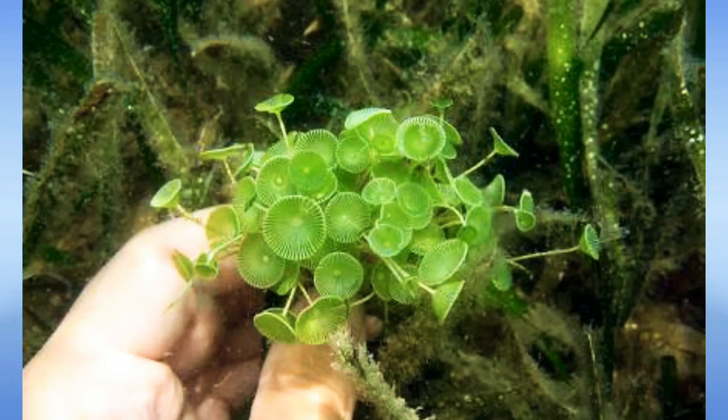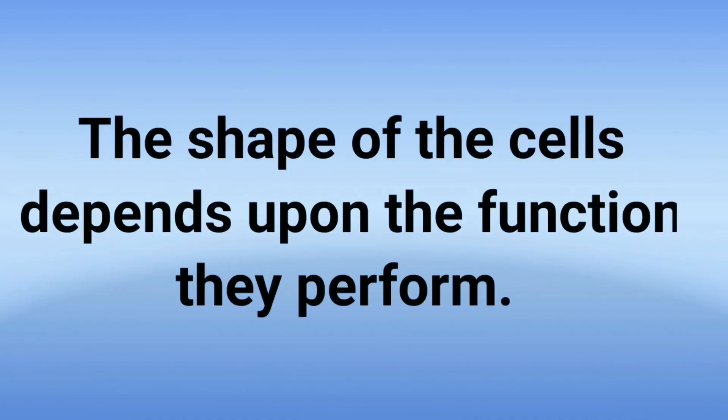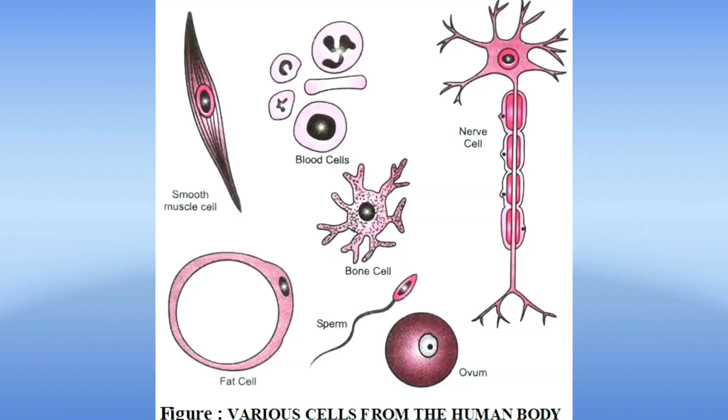These are the egg of an ostrich which is the largest cell in the world. Next is an algae which is found in sea, it is 10 cm long. Similarly, the shape of the cells also depends upon the function they perform. Like in our body there are number of cells, isn't it? Now these cells have different shapes according to the function they perform.